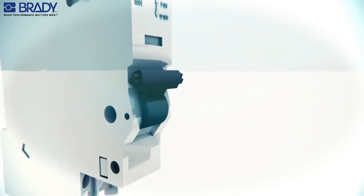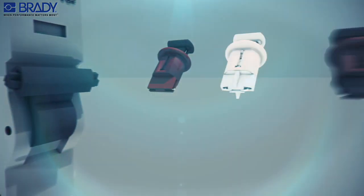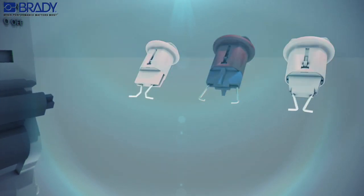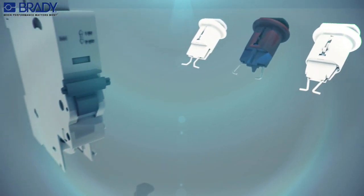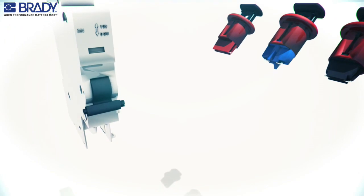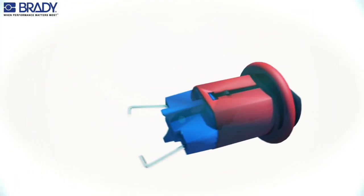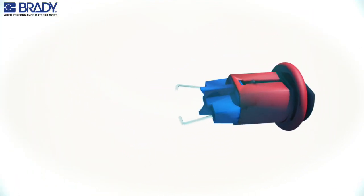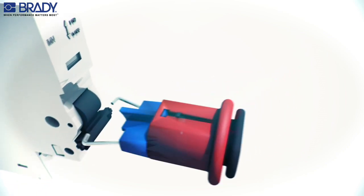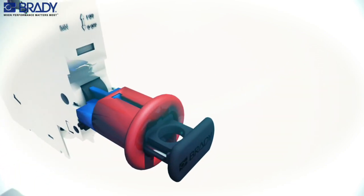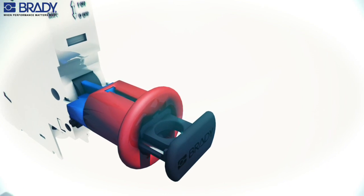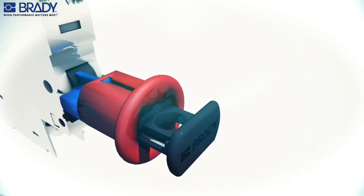Locate the small holes in the center of the circuit breaker casing and select the appropriate pin-in or pin-out circuit breaker device. Place the circuit breaker in the off position, press the lockout device push button to disengage the pins, then position the pins into the small holes of the casing by releasing the push button. Attach a Brady safety padlock.